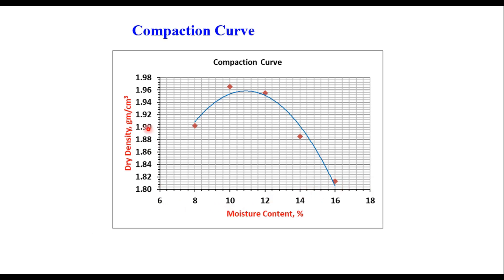Dry density is plotted in g/cm³ or kg/m³ and moisture content in percent. The peak of the curve gives the maximum dry density. Draw a horizontal line at this highest point and a vertical line down to the x-axis — the corresponding x-value is the optimum moisture content and the y-value is the maximum dry density, both of which are specified for field construction.